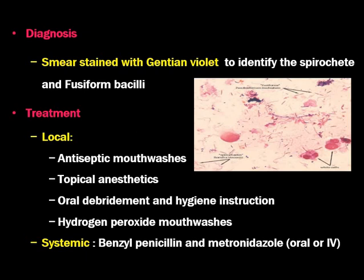Oral debridement and hygiene instruction is very important. The necrotic tissue is to be debrided and patients should be educated about oral hygiene. Hydrogen peroxide mouthwash can be used to decrease slough formation or to clear the slough. Systemic antibiotics are the main means of treatment — we have to give medicine for both the spirochete and the fusiform bacilli. Benzylpenicillin and metronidazole can be given for 7-10 days with adequate hydration, vitamins and mouthwash. Patients shall be alright within 7-10 days.